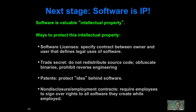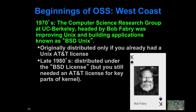What happened a little later on was, as the amount of software actually grew, businesses recognized that software constituted intellectual property. And so there were a variety of ways to protect intellectual property, among them licenses, trade secrets, patents, and nondisclosure contracts. Businesses used all of those mechanisms to try to prevent this intellectual property from being used by others without paying them.